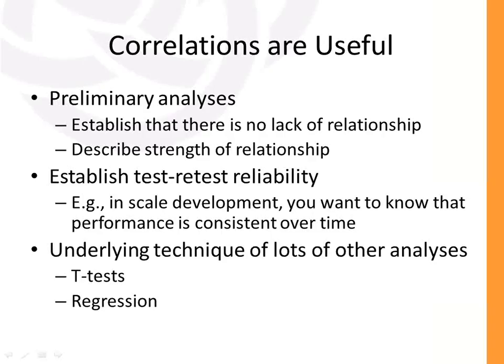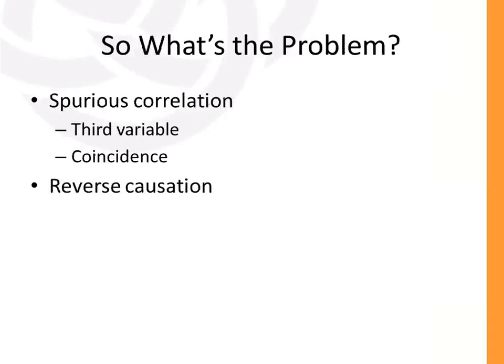There are some problems with an over-reliance on correlations. One main problem is what's called a spurious correlation. One way this works is that there could be a third variable at play that, if examined, would reveal that the two original variables are not causally related as you thought. The other case of spurious correlation is coincidence — like the spelling bee word length and spider deaths, which makes no scientific or clinical sense.